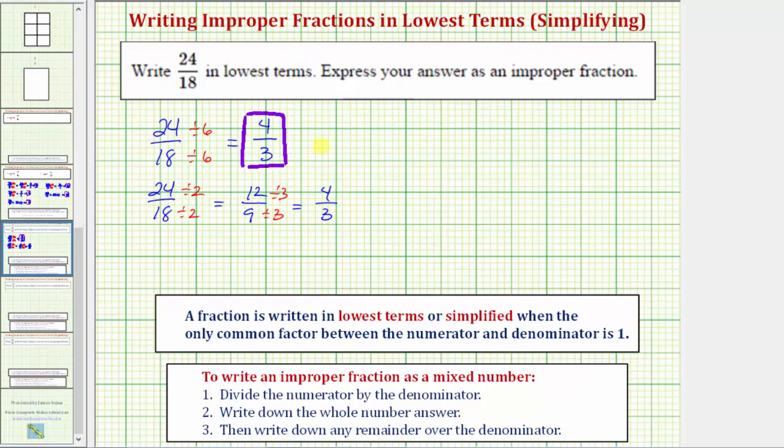Another way to write the fraction in lowest terms would be to look at the prime factorization of both 24 and 18. This is helpful if we have a difficult time determining common factors between 24 and 18. So let's show how to simplify this using prime factors as well.